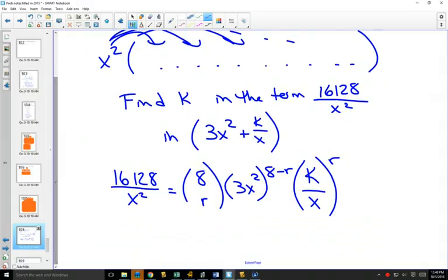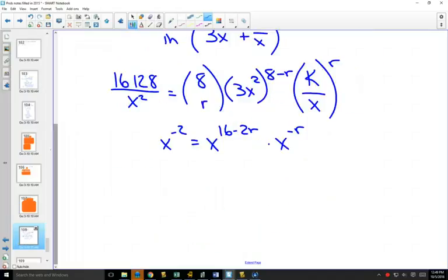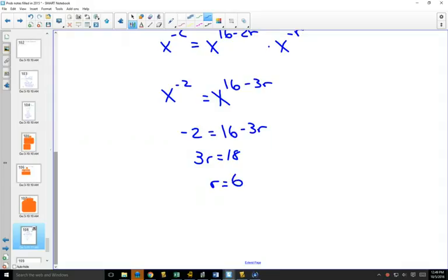We're going to do the same thing that we always do. We're looking for an x to the minus 2. We're going to temporarily forget about all the coefficients. Here I'm going to have an x to the 16 minus 2r. Here I'm going to have a 1 over x to the r, or an x to the minus r. So x to the negative 2 is going to equal x to the 16 minus 3r. Solving for this, 3r is going to equal 18. So we find out that our r value is 6.